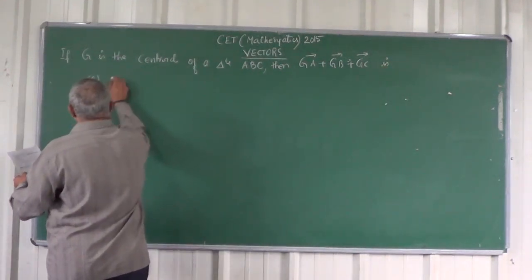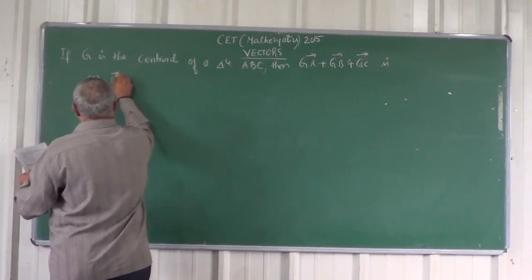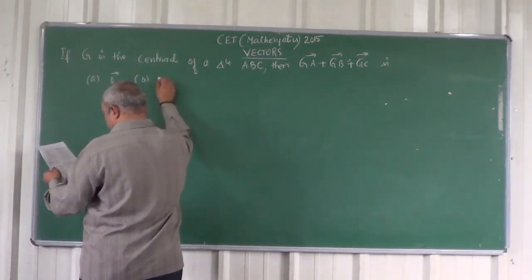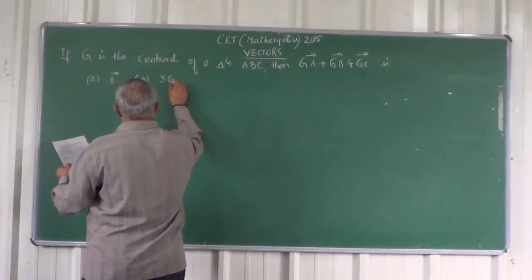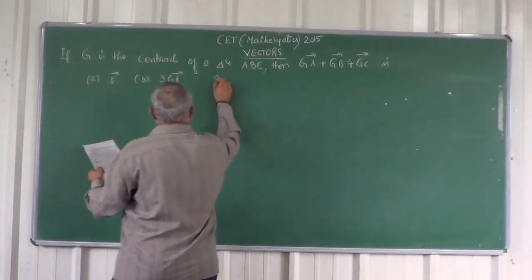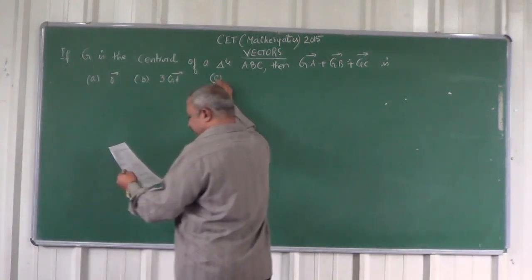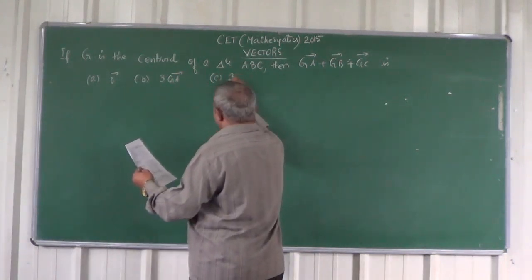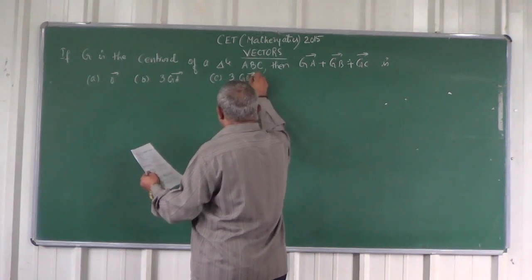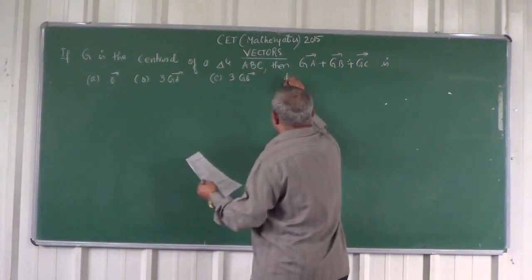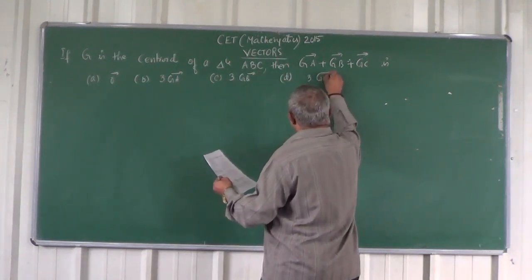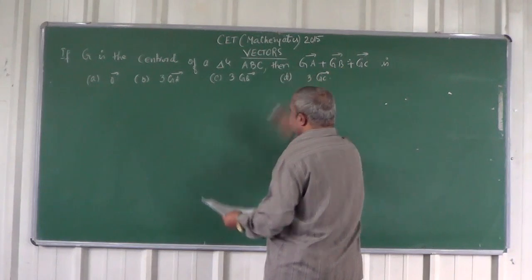Option A: zero vector. Option B: three times of vector GA. Option C: three times of vector GB. Option D: three times of vector GC.